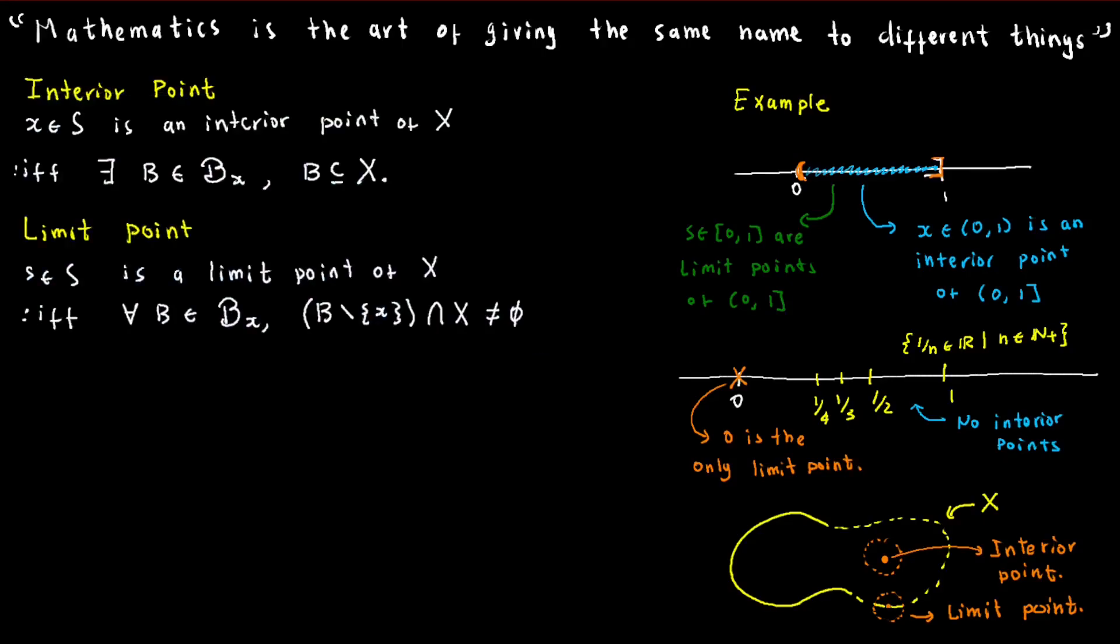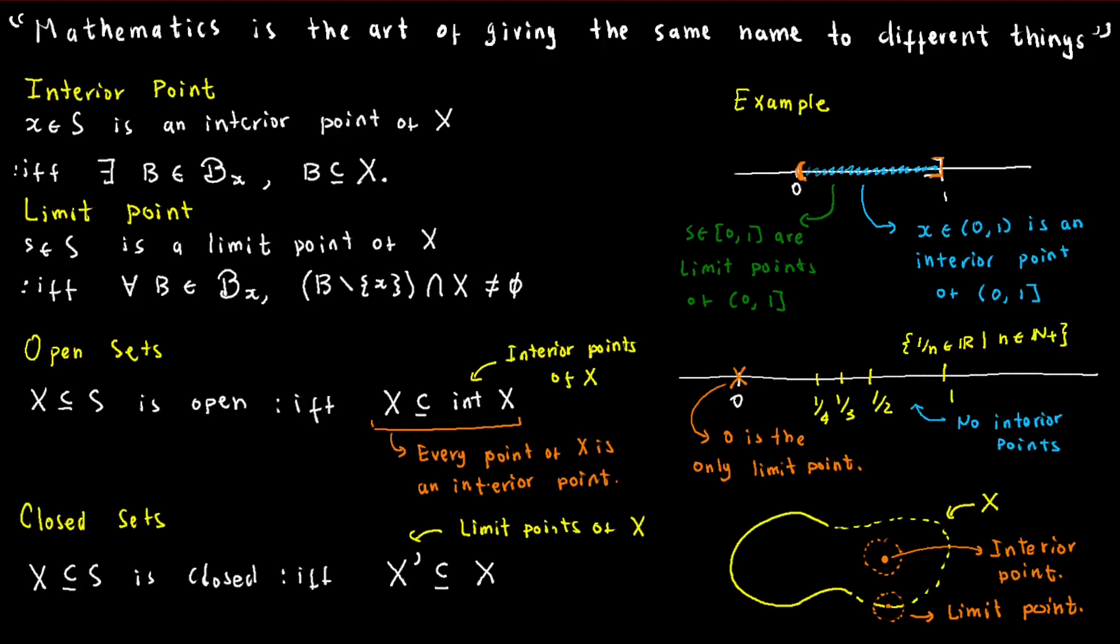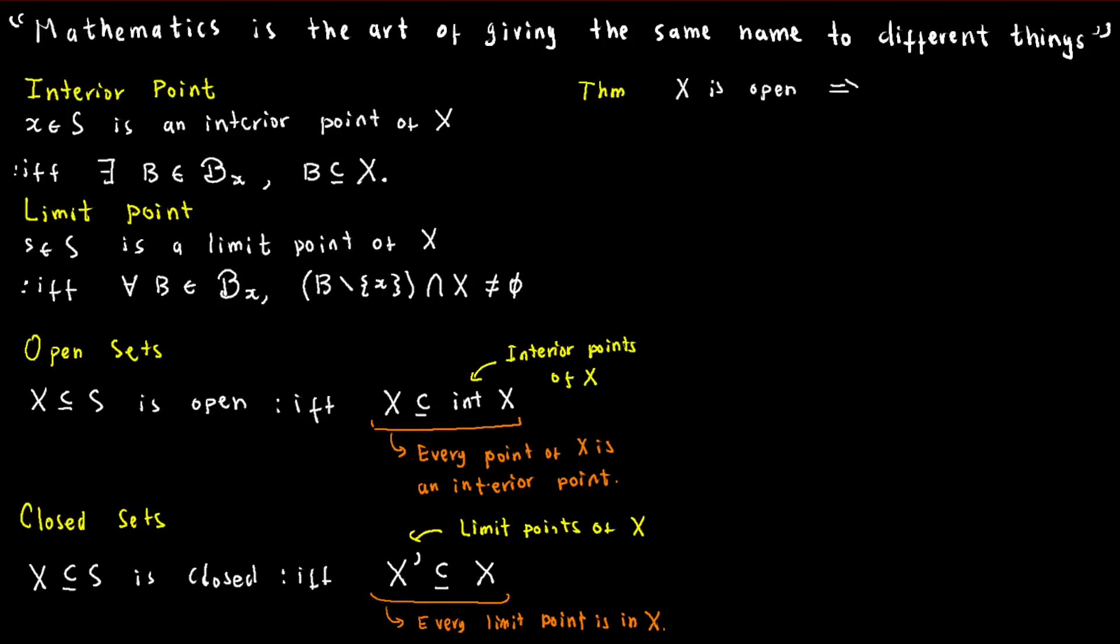Now it's time to define open and closed sets. An open set denoted by O is a set in which every point is an interior point. On the flip side, a closed set contains all of its limit points. Interestingly, open and closed sets are intimately related. In fact, a set X is open if and only if its complement is closed.